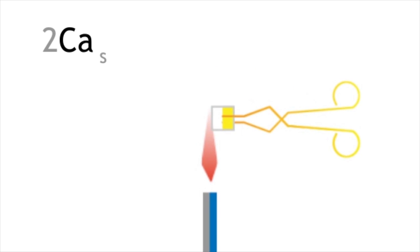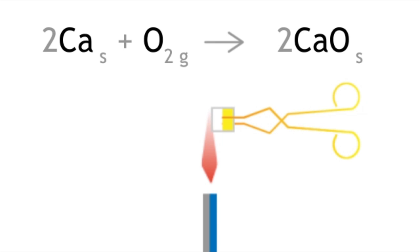Calcium reacts with oxygen to produce calcium oxide, which is a white solid, so magnesium and calcium react with oxygen to form their respective oxides.